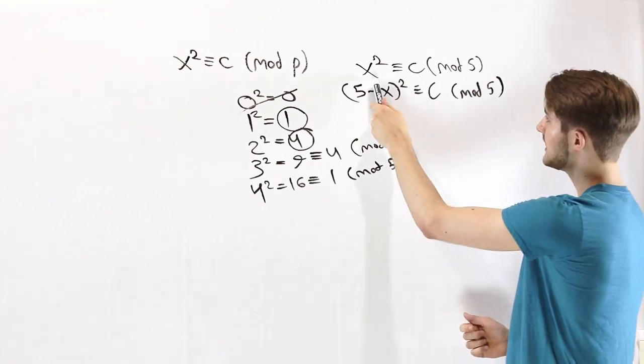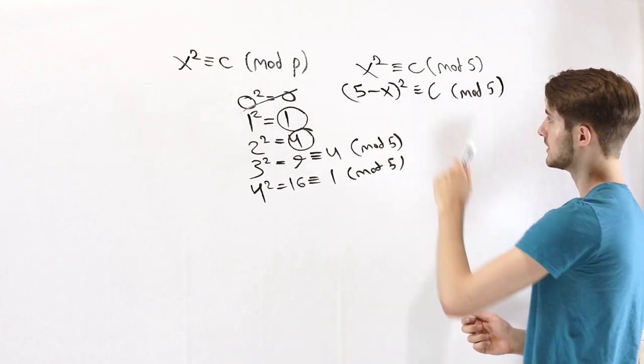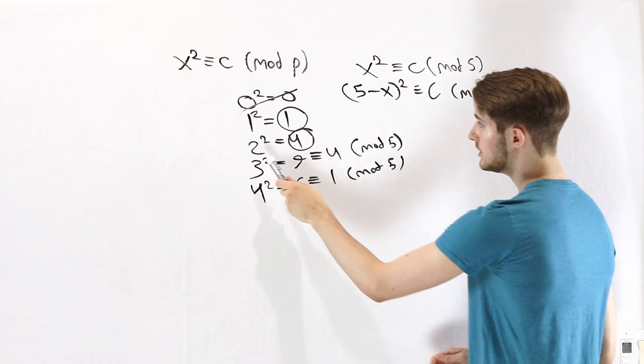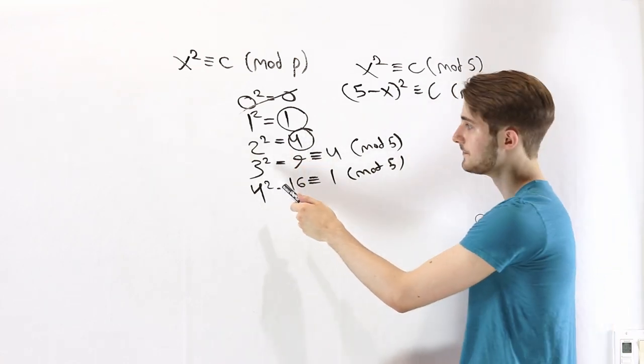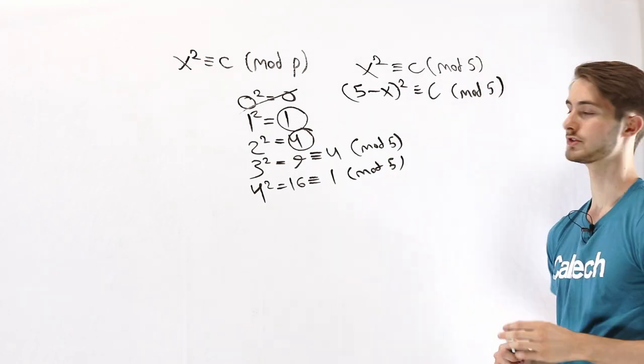What that means is that if x squared is congruent to some number, then 5 minus x squared will be congruent to the same number. So we see in this case, for example, 2 squared is 4 and 5 minus 2, which is 3, also gets 4 after we square it and then reduce mod 5.